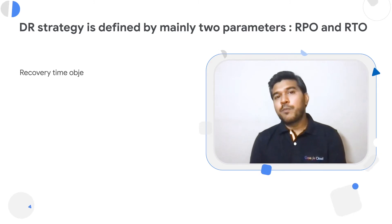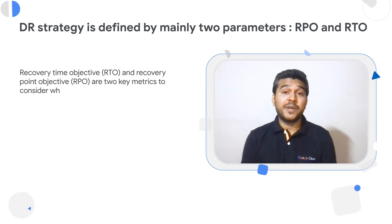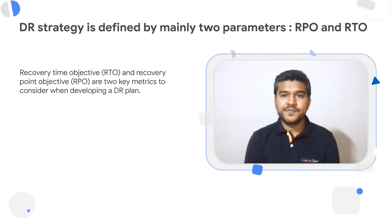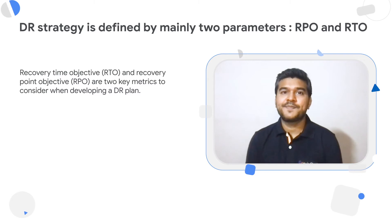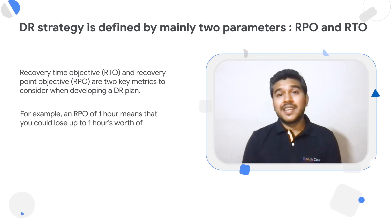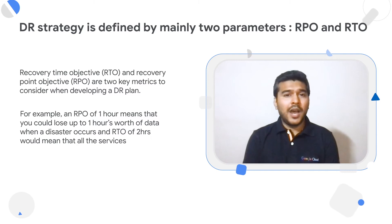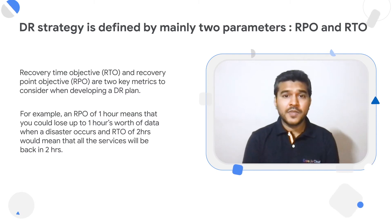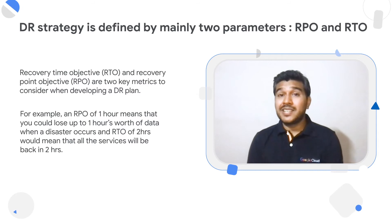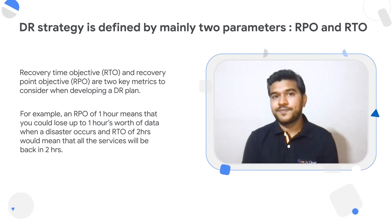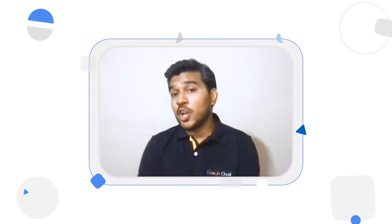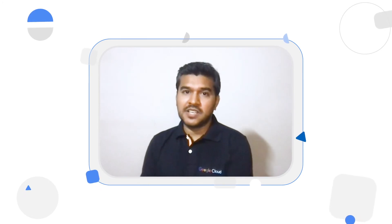RPO is Recovery Point Objective, which is expressed in hours and represents how much data you could lose when a disaster happens. RTO is Recovery Time Objective, again expressed in hours, and specifies how many hours it takes you to recover to a working state after a disaster. So the smaller the values of RPO and RTO are, the lesser the data loss and the faster the business can recover from a disaster.